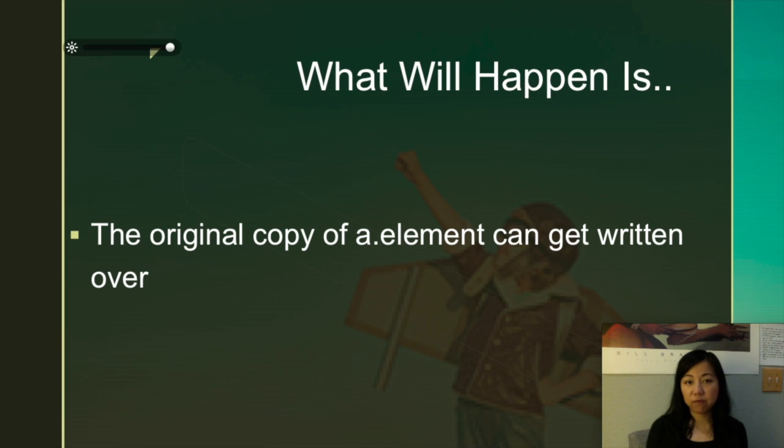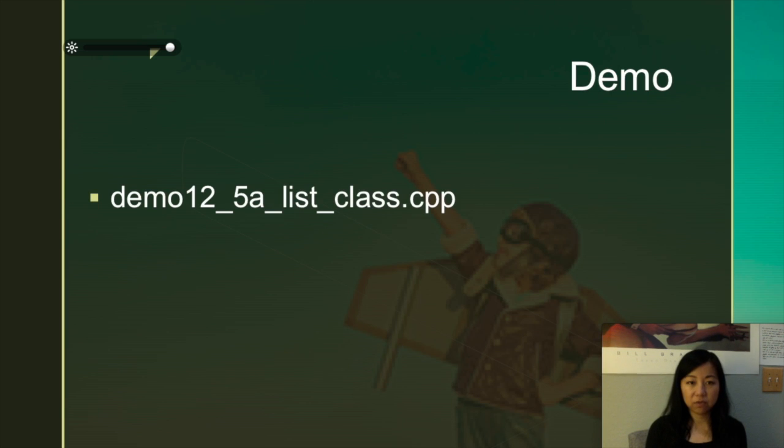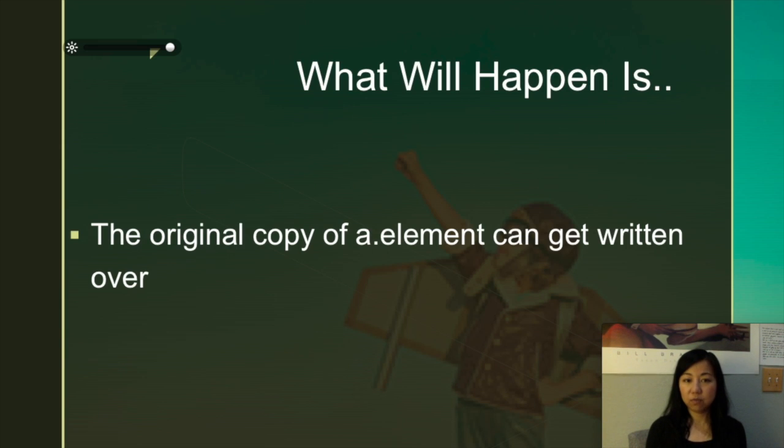I just want to give you a review of that because I want you to know why we are needing a copy constructor. So like I said, the original copy of a dot element is going to get written over or even the pointer, right? The value of the pointer can be changed. So very simply, you can just say that it equals to null and then you can break the code.